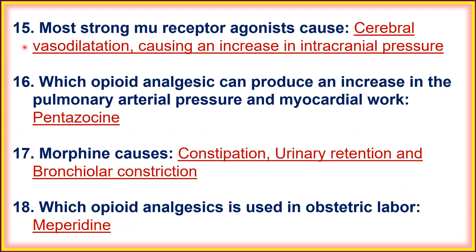Fifteenth, the most strong mu receptor agonist causes cerebral vasodilation, causing an increase in intracranial pressure. That is morphine, which is a strong mu receptor agonist that causes cranial vasodilation and increase in intracranial pressure.